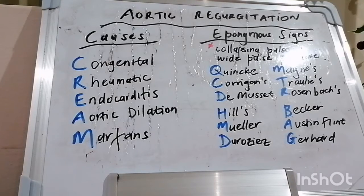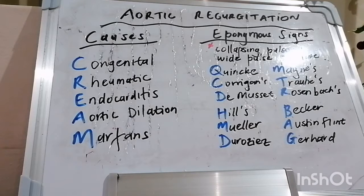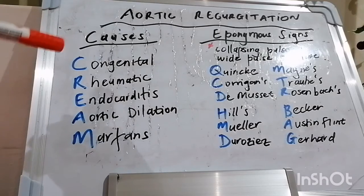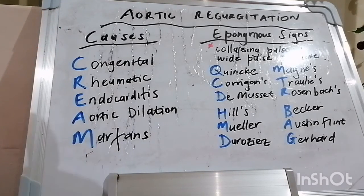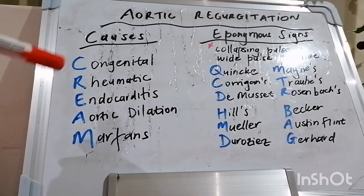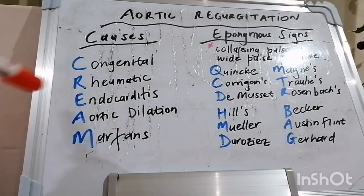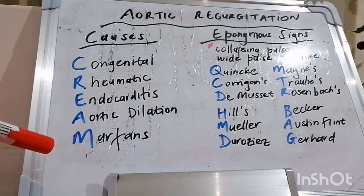When we speak of aortic regurgitation, we talk of it in terms of etiology as being either a valve problem or an aortic root problem. The easy way to remember the etiologies is: either congenital, like a bicuspid aortic valve; rheumatic in etiology, as in rheumatic heart disease; due to endocarditis; due to aortic root dilatation, of which there are numerous causes; or a patient with Marfan syndrome.